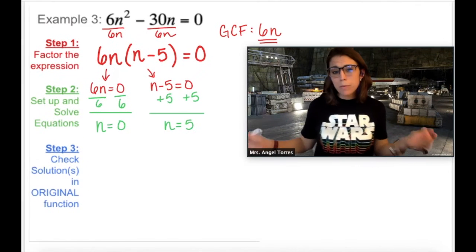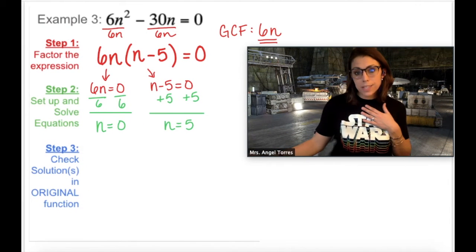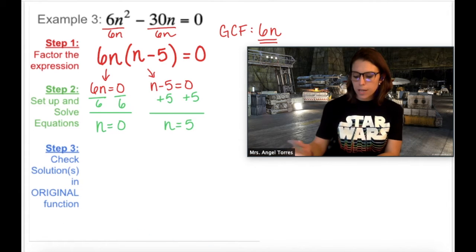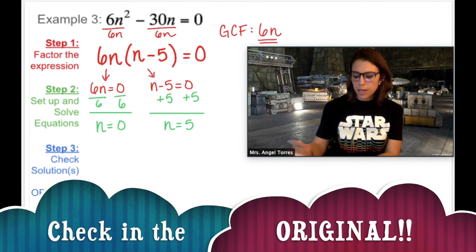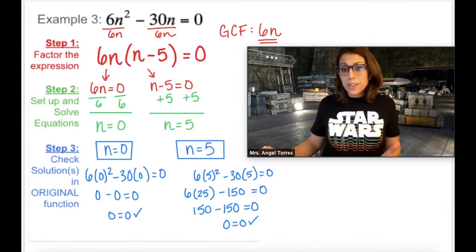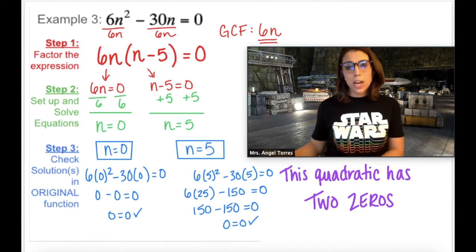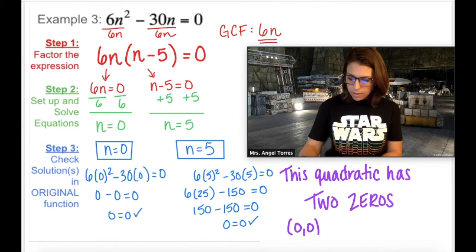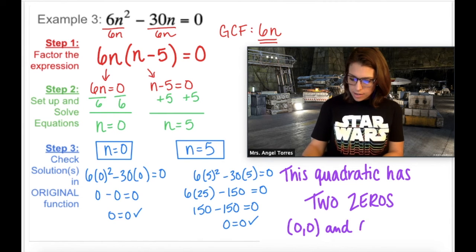So whether you use mental math or solving, I ended up with 0 and 5. So I'm going to check both of these in the original function in standard form. So what does all this mean? This means that the quadratic has two zeros. They are 0, 0 and 5, 0.